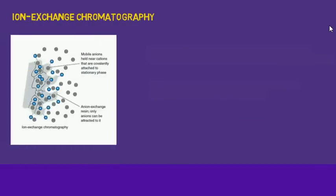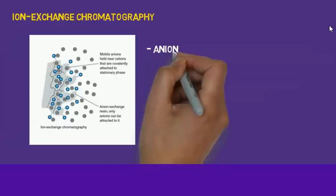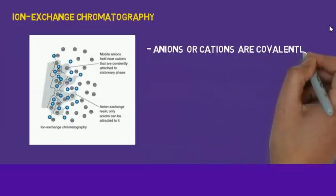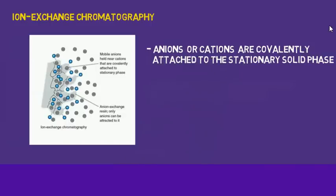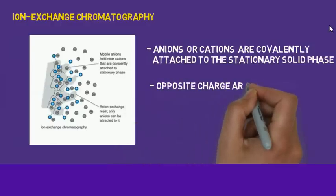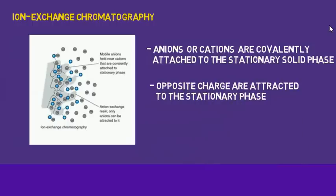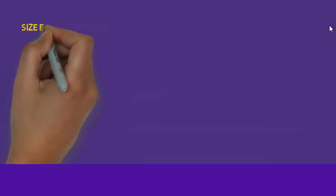In ion exchange chromatography, two types of ions — anions and cations — are covalently attached to the stationary phase. The molecules you want to separate contain the opposite charge and attach to the stationary phase, and are then eluted and separated.